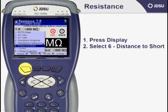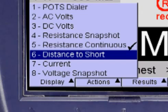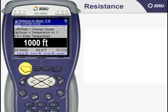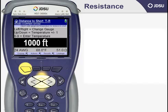We actually provide a distance to short measurement. If you press the F1 button underneath the word Display, you'll see the distance to short as item number 6. Go ahead and select that. You can see here that the HST provides you with the distance to short calculation in large font in the middle of the screen at 1000 feet. On the bottom left-hand side you'll see the cable gauge, which you can change by pressing the left and right arrows. If you need to change the temperature, do so with the up and down arrow buttons.